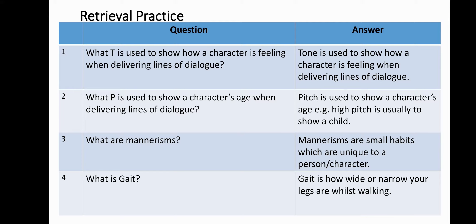Here are the correct answers. Please make sure you write these down on your sheet. Number 1: Tone is used to show how a character is feeling when delivering lines of dialogue. Number 2: Pitch is used to show a character's age. For example, high pitch is usually to show a child.